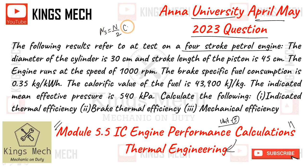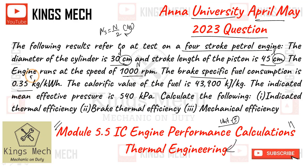The diameter of the cylinder, that is the bore, and the stroke length of the piston L is 2 cm. The engine runs at speed N, that is 1000 rpm. The brake specific fuel consumption is BSFC = 0.35 kg per kilowatt hour. The calorific value of the fuel, CV, is equal to 43,900 kJ per kg.